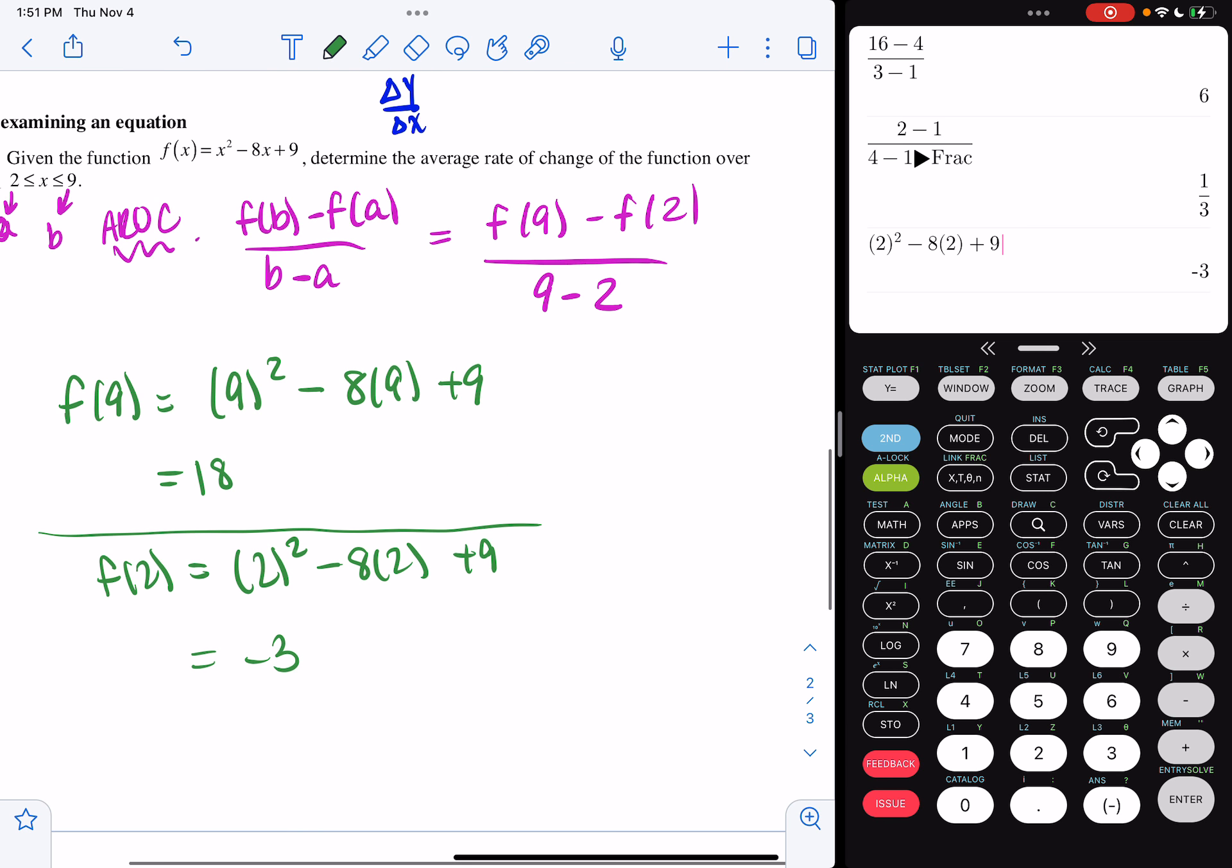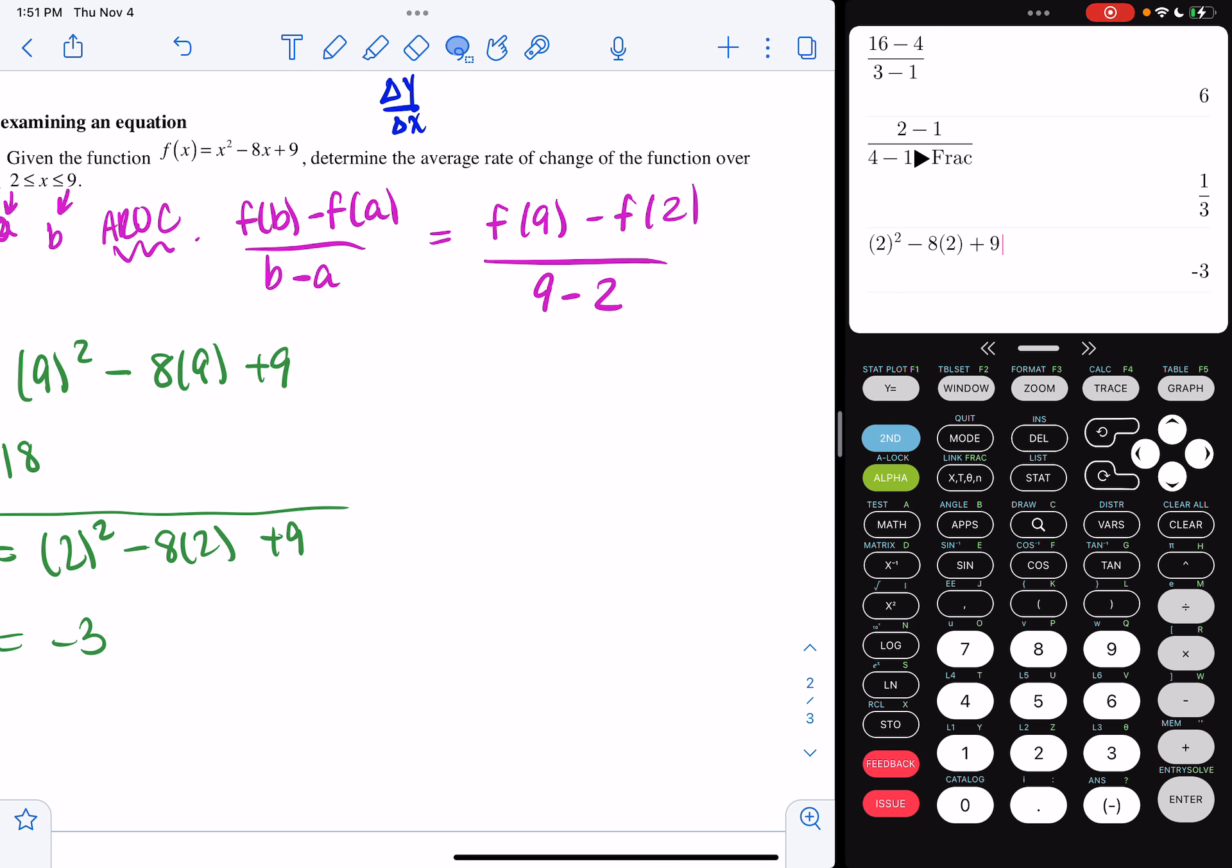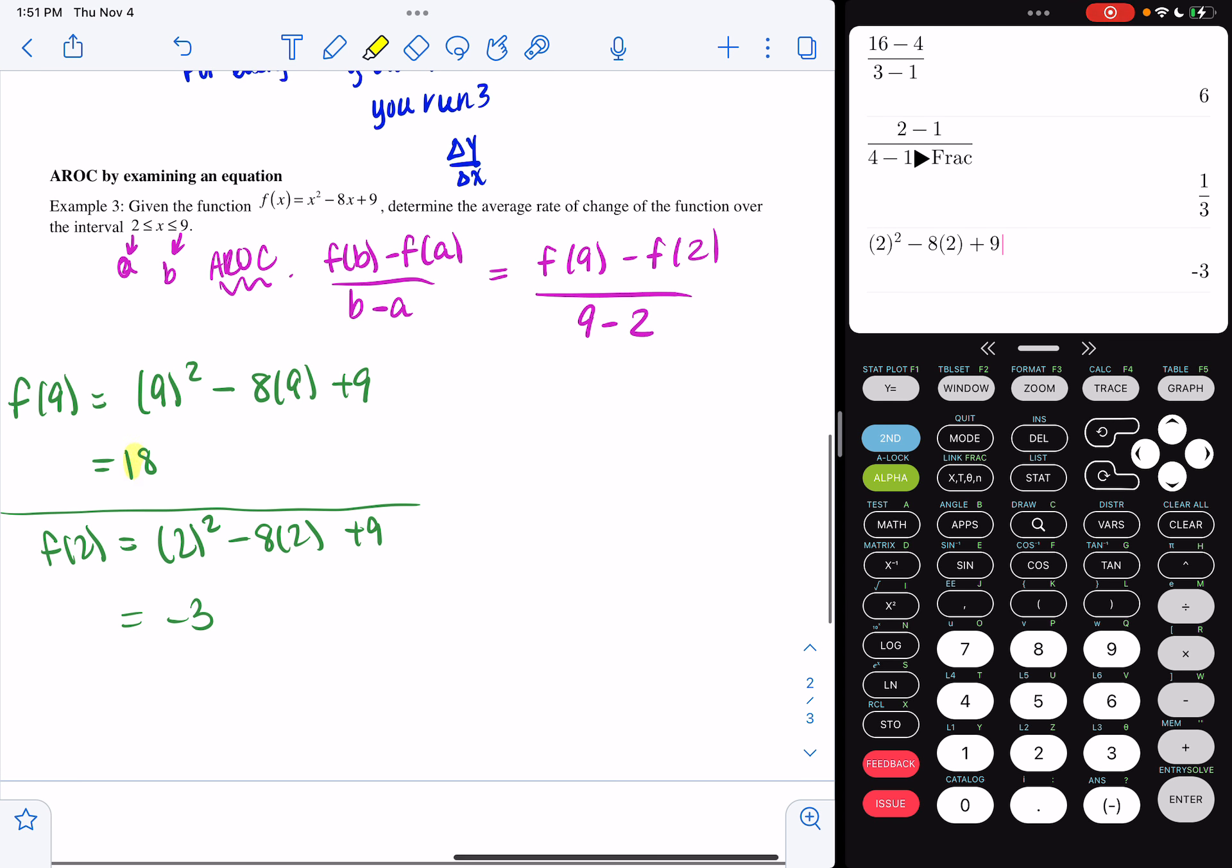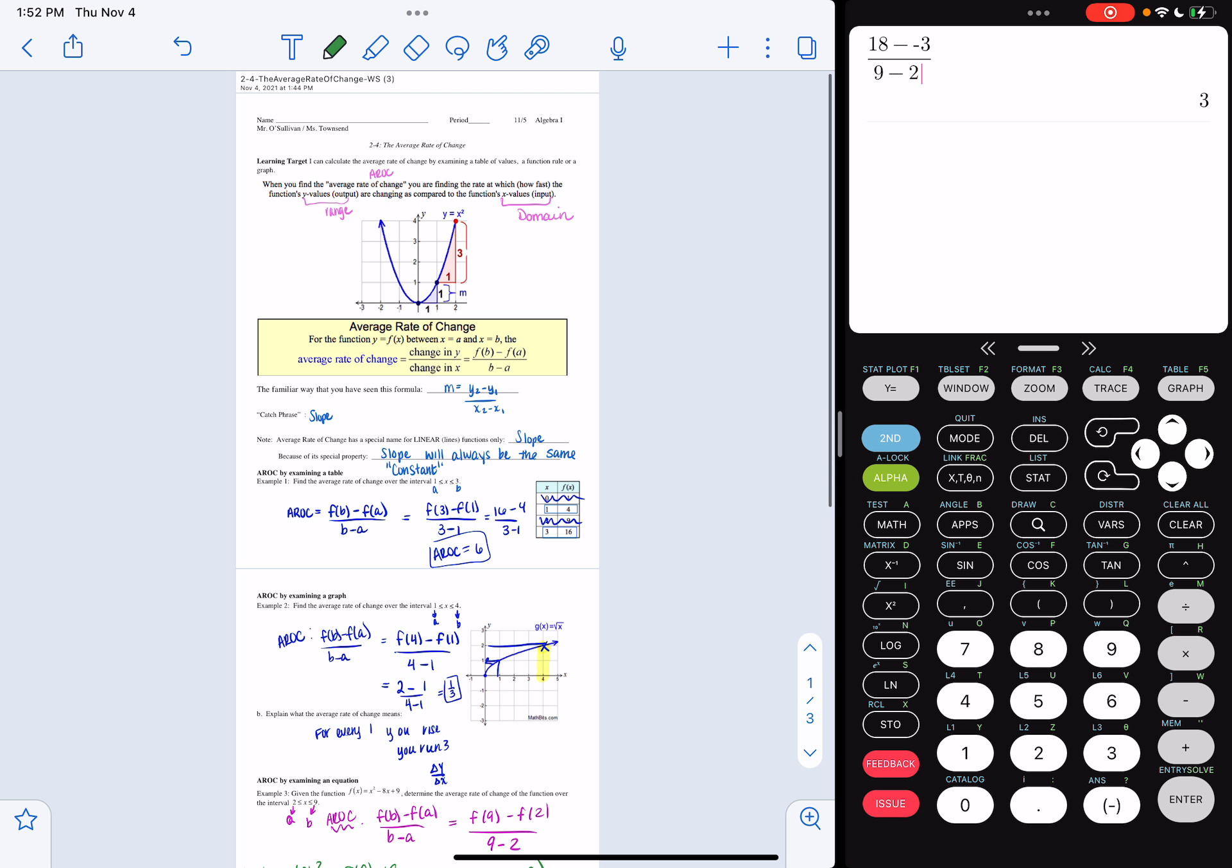So now I'm going to substitute those values into my AROC formula. So when I do my substitutions, I get f of 9 is 18 minus f of 2, which is negative 3, all over 9 minus 2. Now I'm going to type that into my calculator. So alpha y equals enter, over 9 minus 2, and that gives me 3. So my AROC for this function is 3. And that's how you calculate the average rate of change.